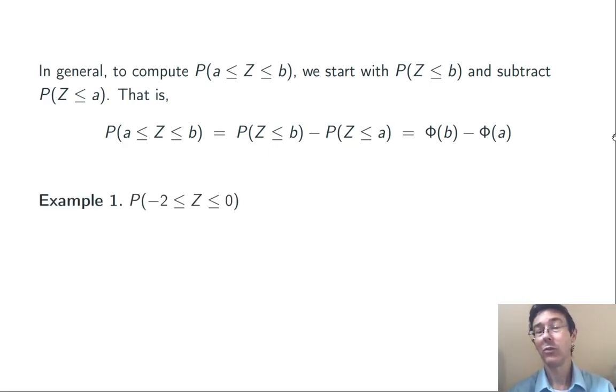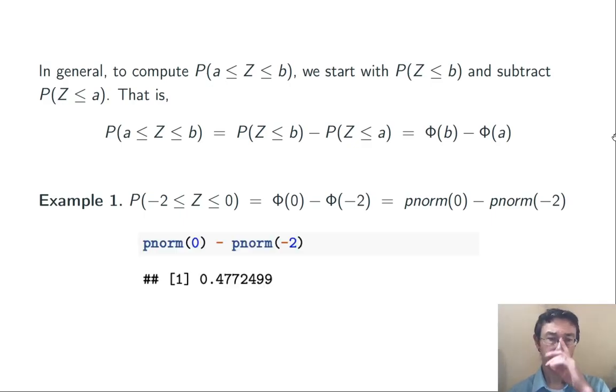Here's an example. Let's do the probability that -2 ≤ z ≤ 0. So, we're going to want to do Φ of the top value minus Φ of the lower value. Φ(0) - Φ(-2). In R, pnorm(0) - pnorm(-2). Here's the command. It gives us 0.477. So, this probability is about 47.7%.